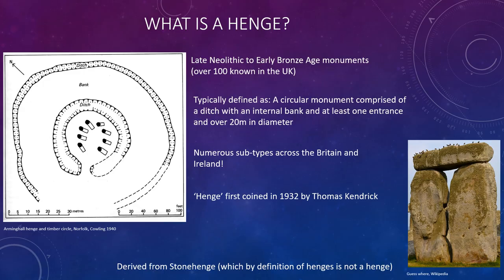Let's begin with some basics. What is a Henge Monument? Henges started construction in the late Neolithic period around 3100 BC and these carry on until about 2000 BC at the end of the early Bronze Age. There are over 100 known Henge Monuments in the UK but there are definitely more which are yet to be discovered.